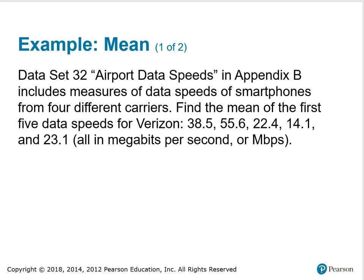Example: Dataset 32 airport data speeds in Appendix B includes measures of data speeds of smartphones from four different carriers. Find the mean of the first five data speeds for Verizon. Here are the data speeds that we're going to use: 38.5, 55.6, 22.4, 14.1, and 23.1. These are all in megabits per second, or capital MBPS.